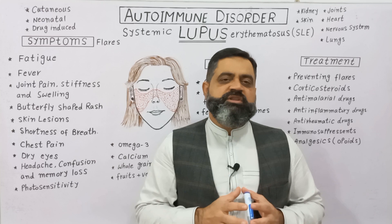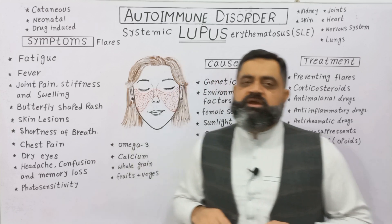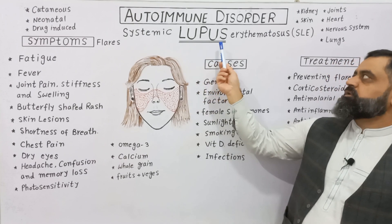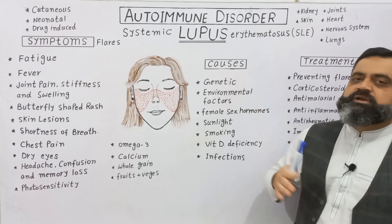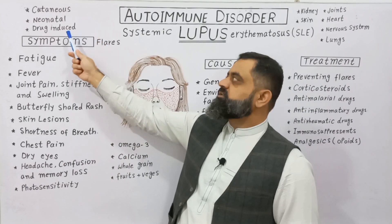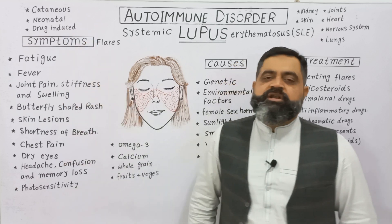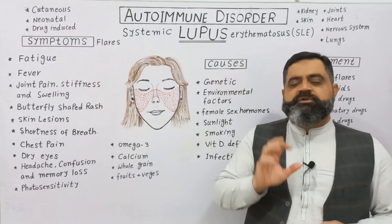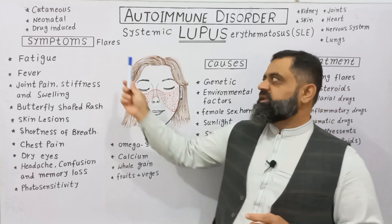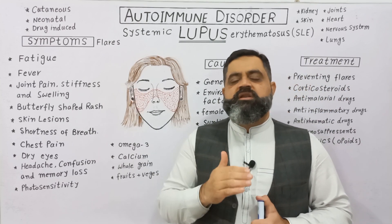There are different types of lupus, but the most common, as already mentioned, is Systemic Lupus Erythematosus. There are other types of lupus as well, which are known as cutaneous lupus, neonatal lupus, and drug-induced lupus.